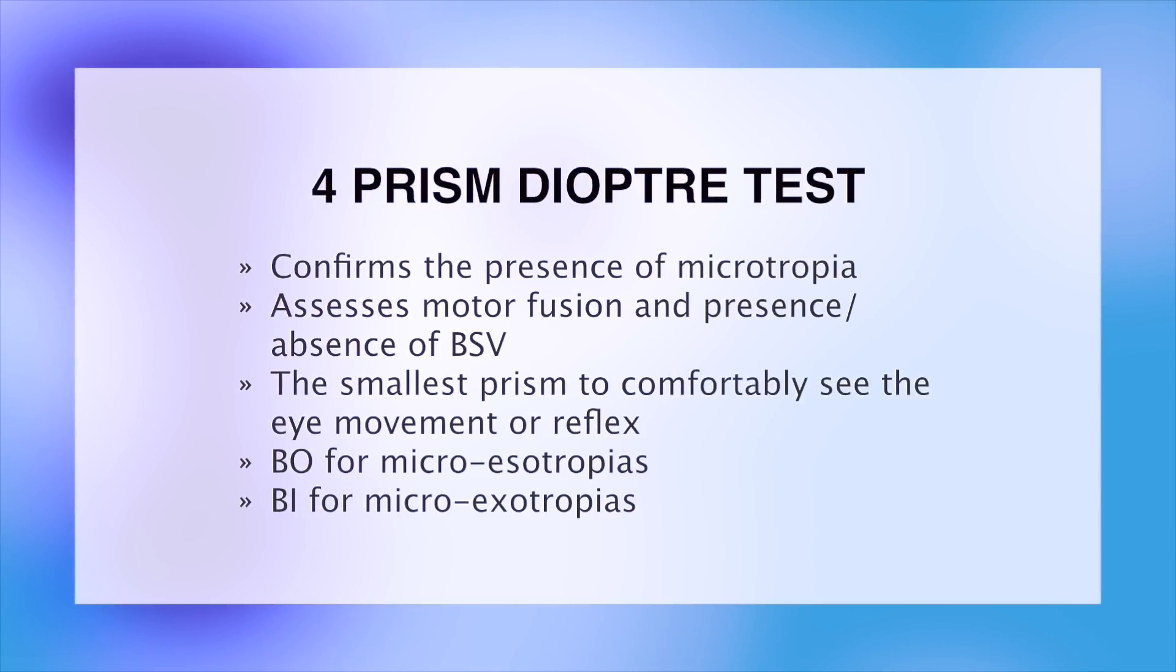A 4-Prism Diopter Test is used to confirm the presence of a suspected microtropia by assessing motor fusion objectively and is determined by the presence or absence of binocular single vision.